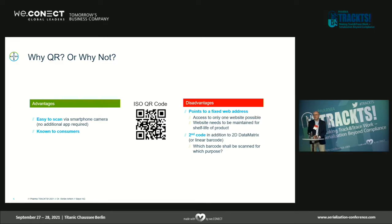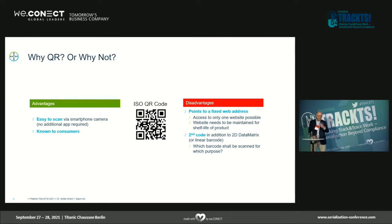Another disadvantage is that the QR code is a second, or often a third, barcode in addition to the ones already on the package. Usually in Europe we have the 2D data matrix code, often still the linear EAN code, and now the QR code comes in addition.